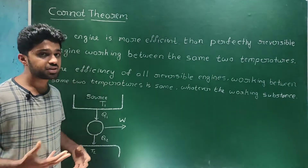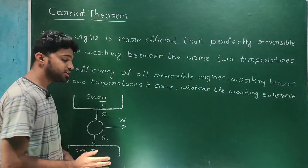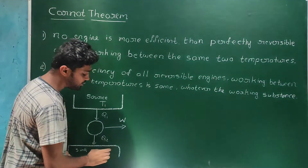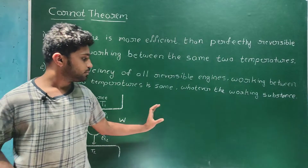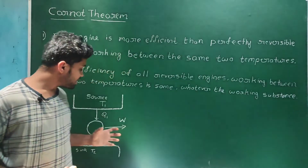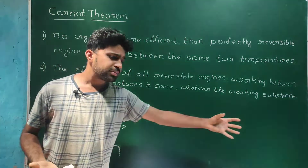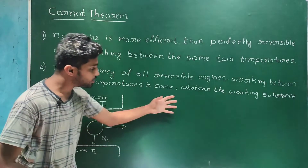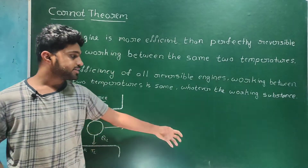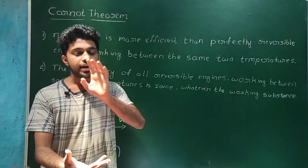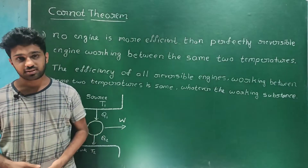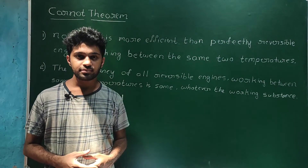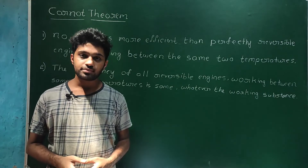As long as the temperature difference is the same — the source and sink remain the same, for example 500 Kelvin and 20 Kelvin — all reversible engines, whether using petrol, diesel, or any other fuel, will have the same efficiency. The engine efficiency depends only on the temperature difference. That will be clear. In the next video, we will study the concept of entropy. All the best.